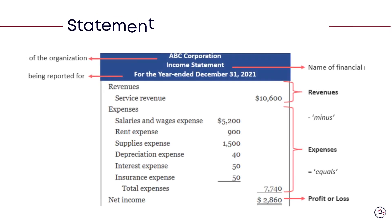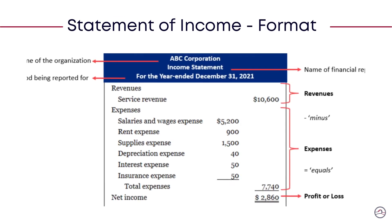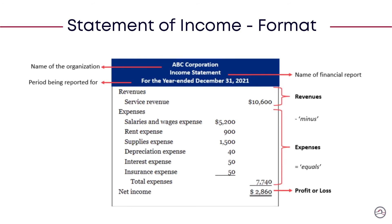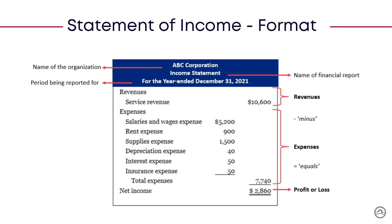Here is an example of an income statement. It is important to understand the format because the underlying logic is universal and applies to all organizations. The name of the organization is found at the top, followed by the report title and time period. Note that it says 'for the year ended' — meaning this report explains the revenues and expenses for the entire year of 2021, ending on December 31st, 2021. Each line item is an account within the ledgers. The top part shows revenues, with expenses in the middle, and resulting profits or losses on the bottom.